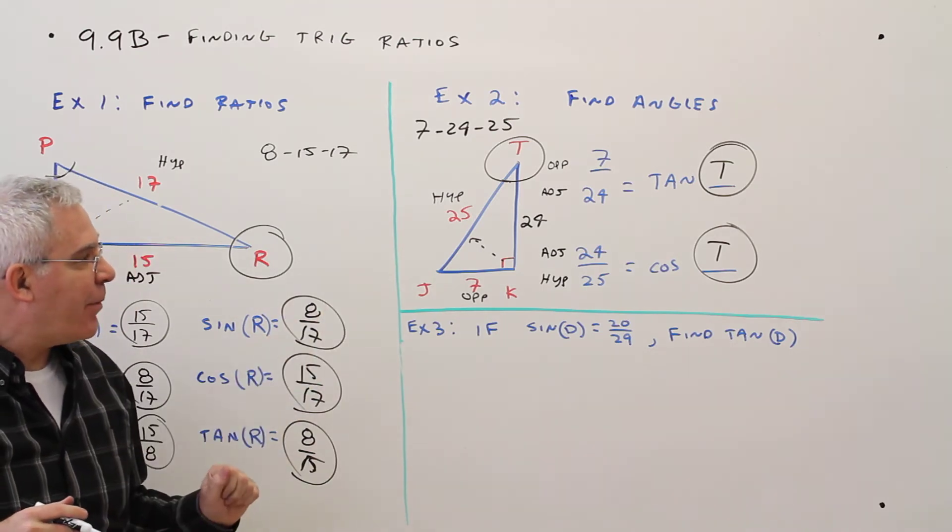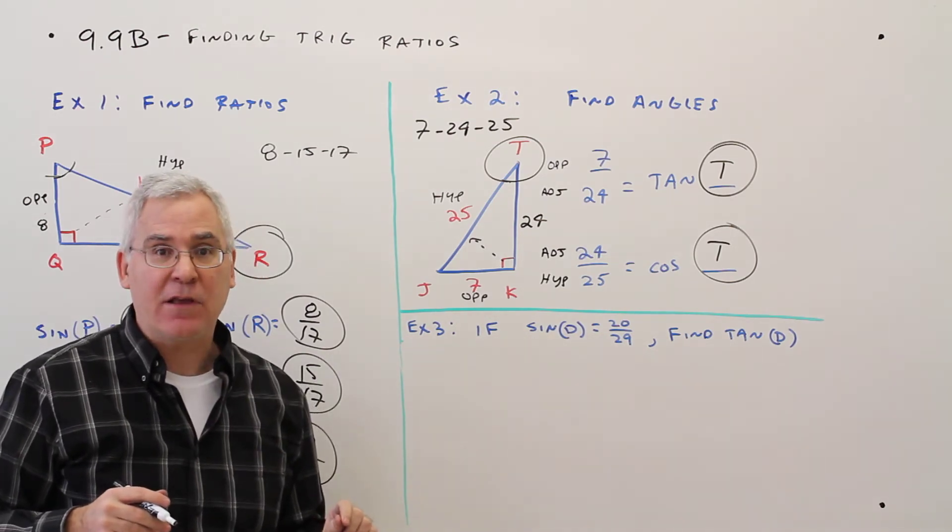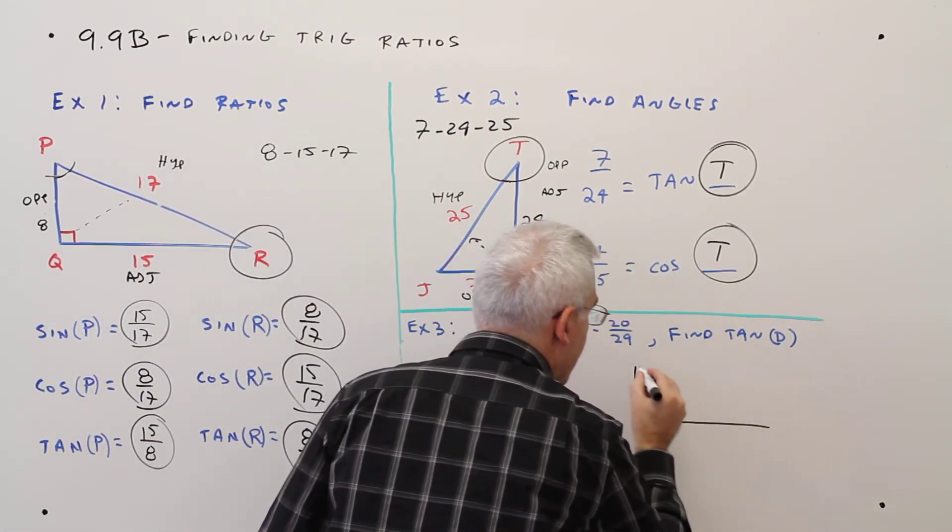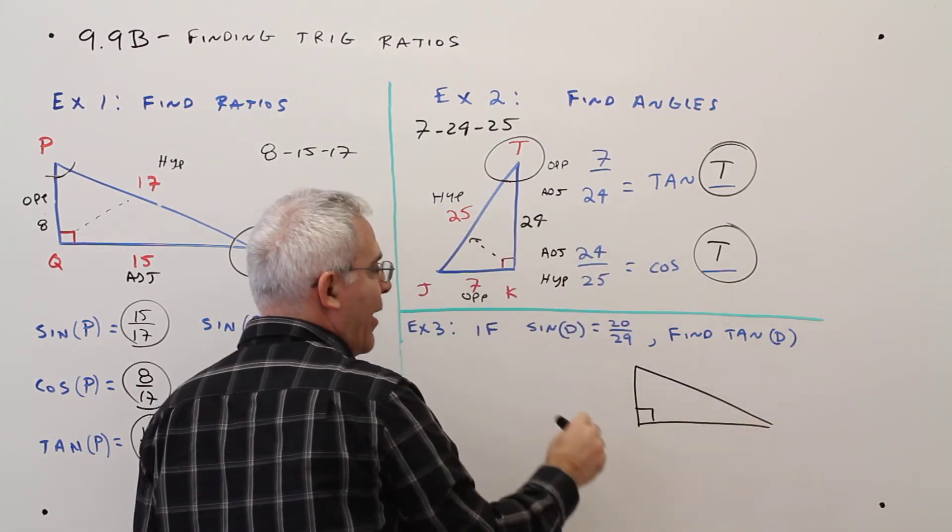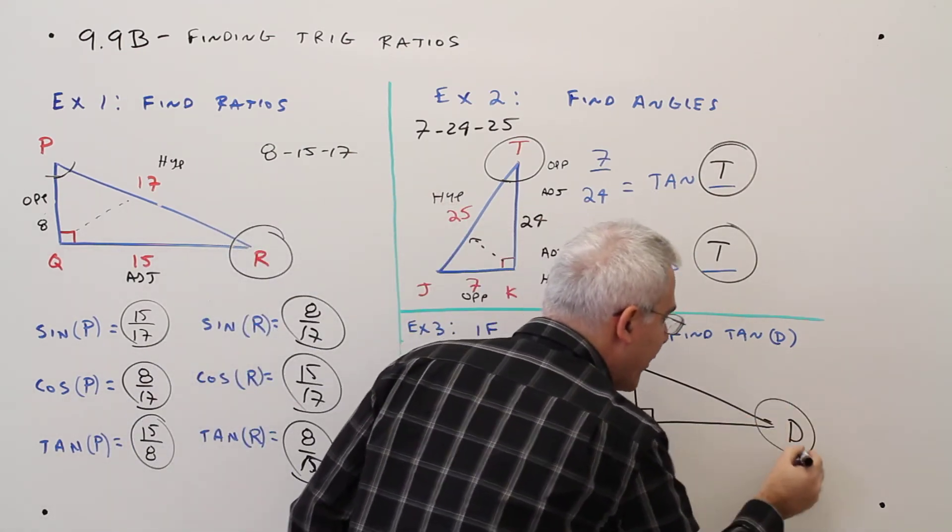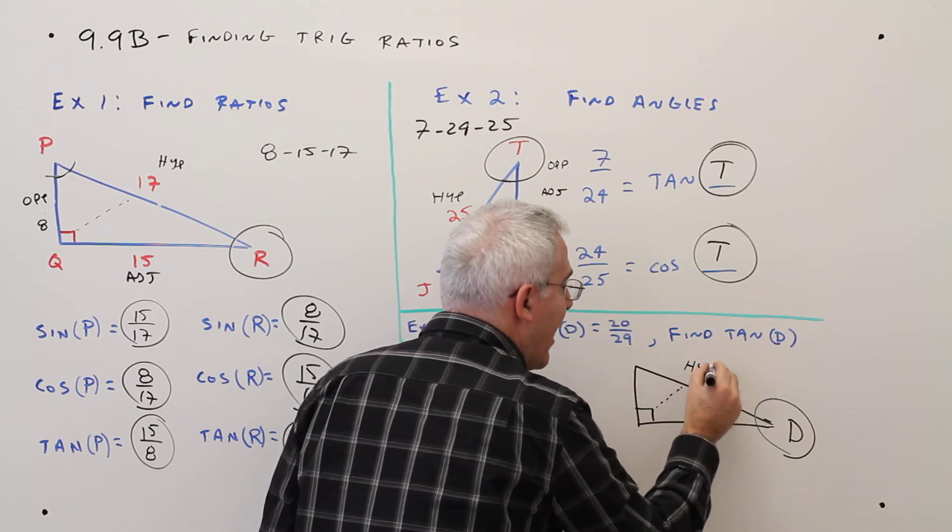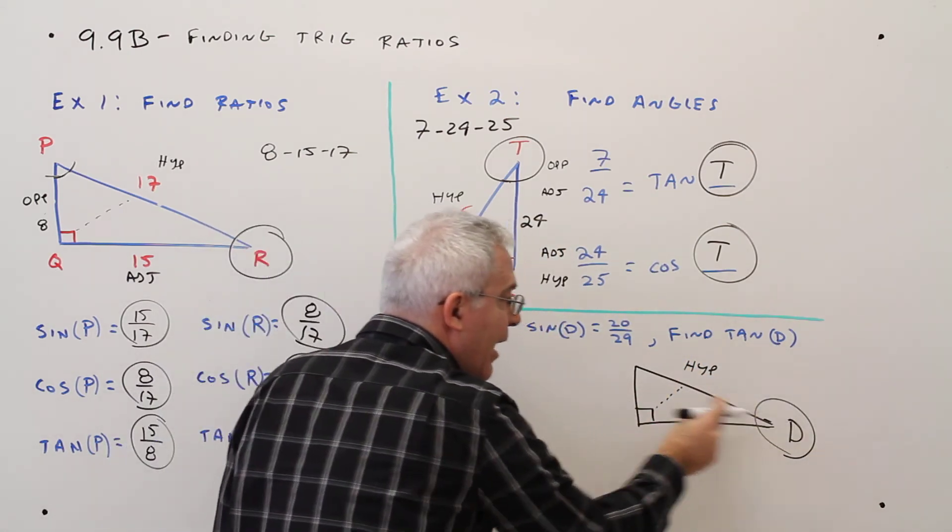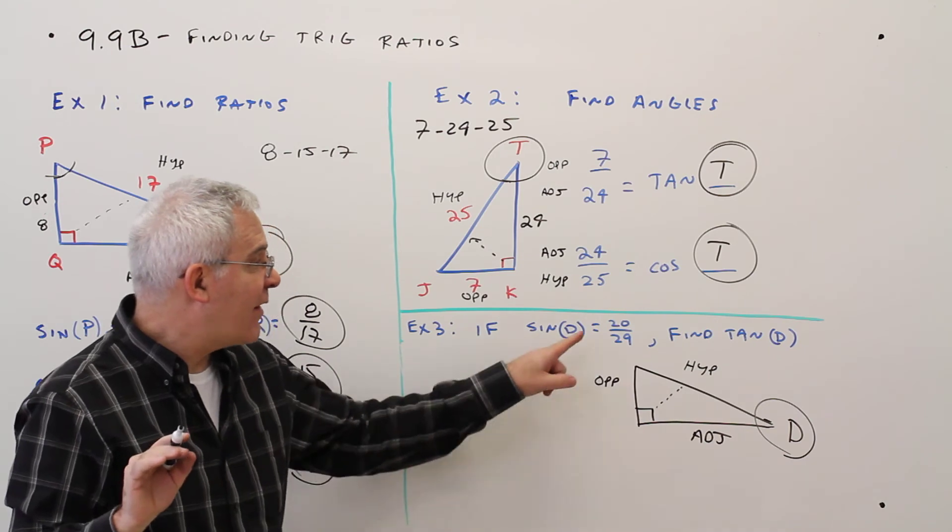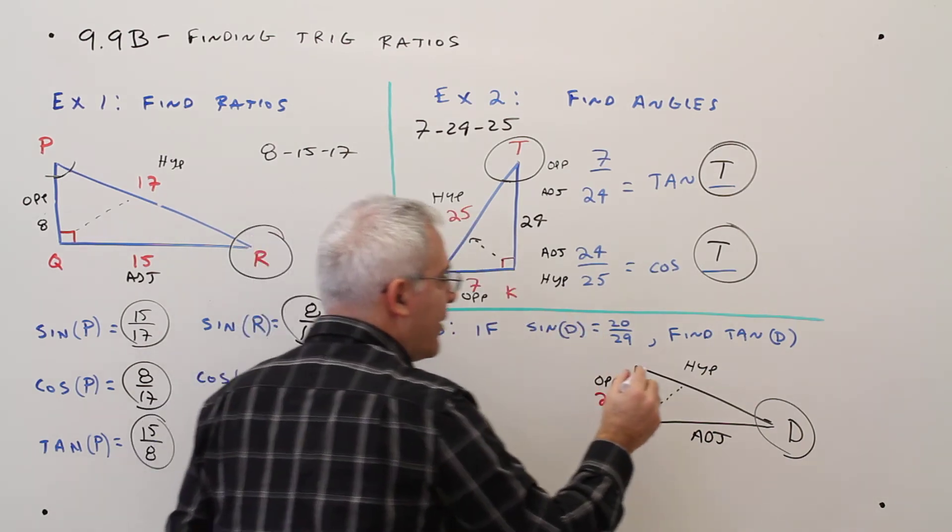Okay, third example. If the sine of angle D is 20 over 29, find the tangent of angle D. I'm a visual person, so I'm going to start by drawing a little diagram. Okay, I've got my right angle. We're talking about D. You could put D at either of those acute angles. I'll just choose to make it be there. I'll circle it. That'll be my reference angle, and I'll start labeling. Always, opposite the right angle is the hypotenuse. Opposite the angle is the opposite. The other one is adjacent. Alright, so now I've got my picture. Let's fill in numbers. So the opposite would be 20. The hypotenuse would be 29.